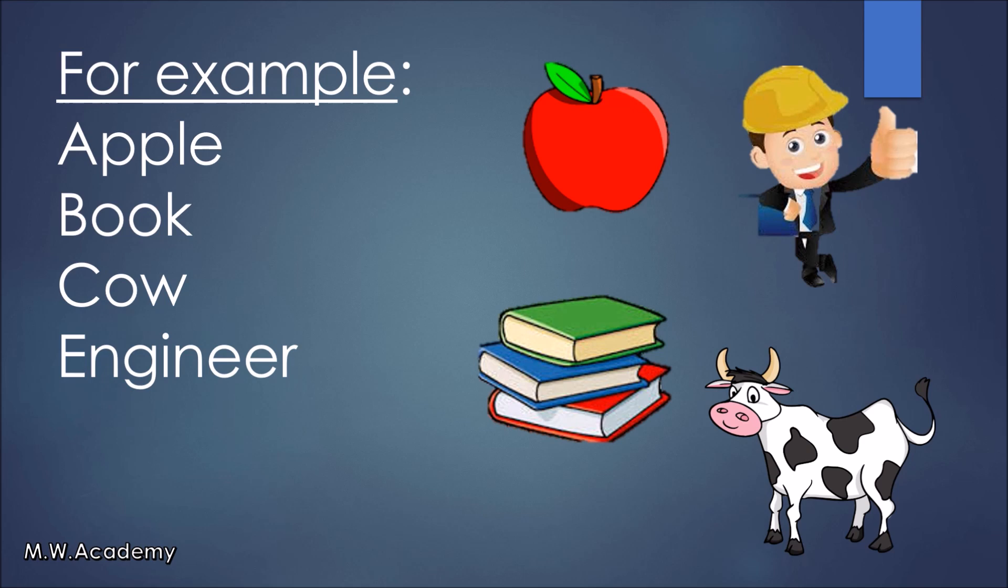For example, apple. We can see apple. We can touch apple. We can taste apple. Apple is concrete noun. Book. We can see book. We can touch book. Book is concrete noun.